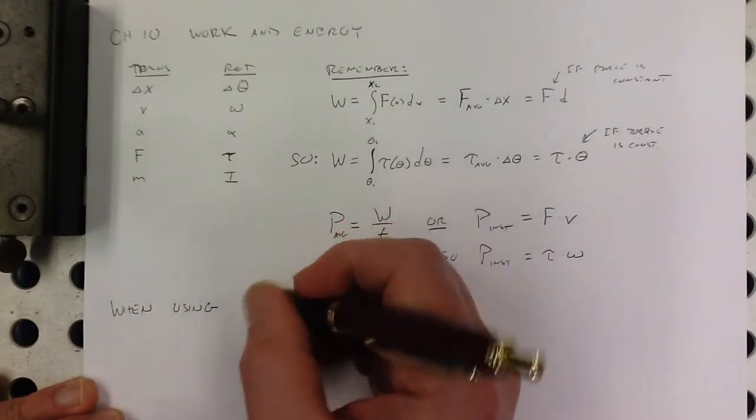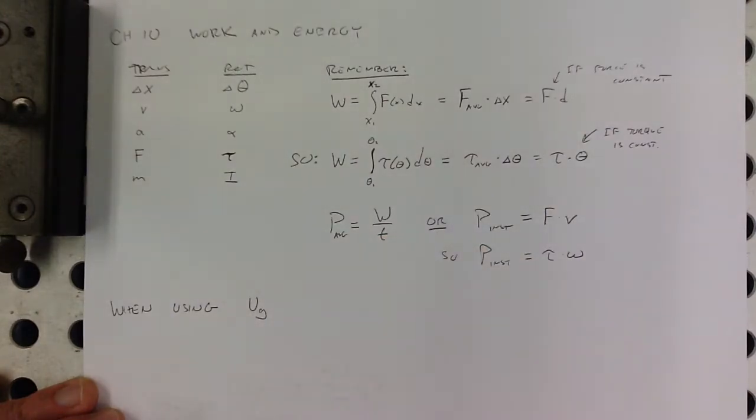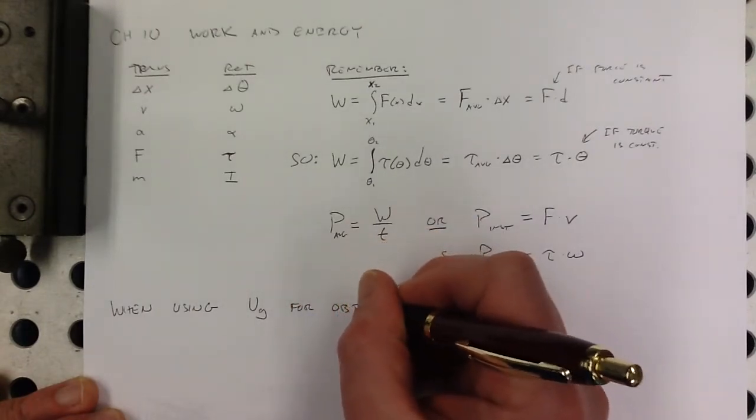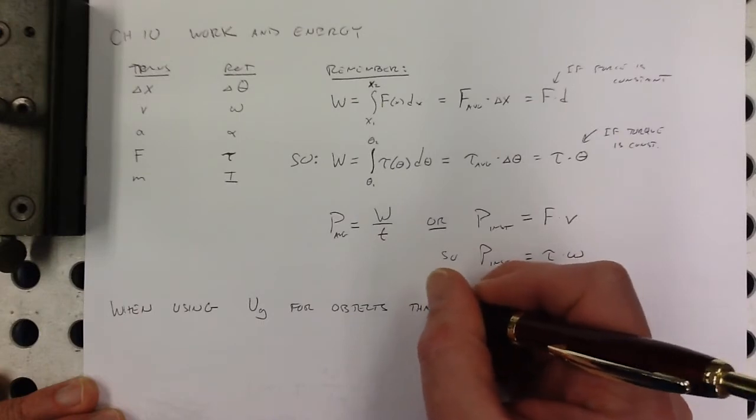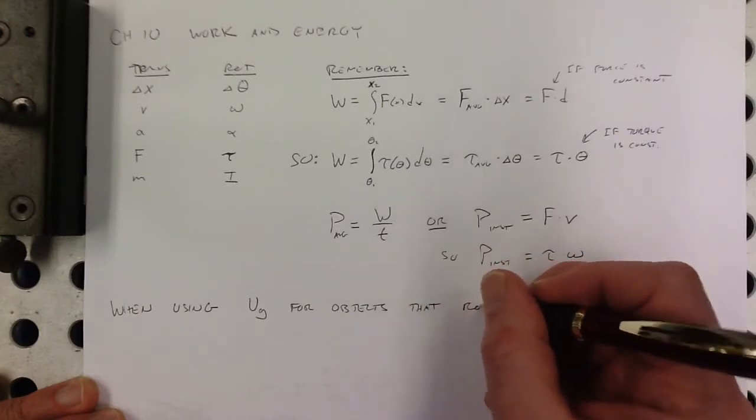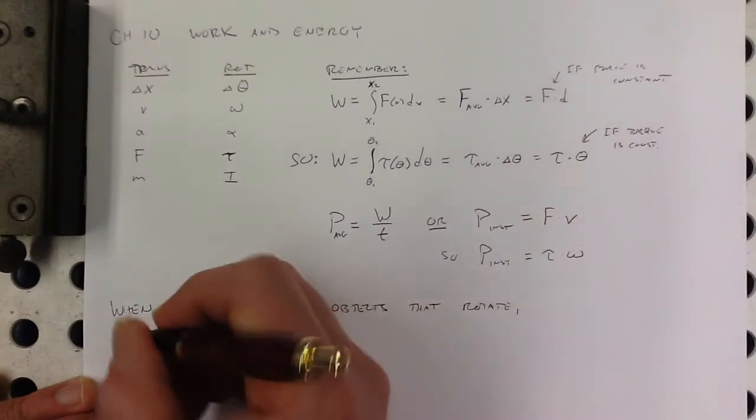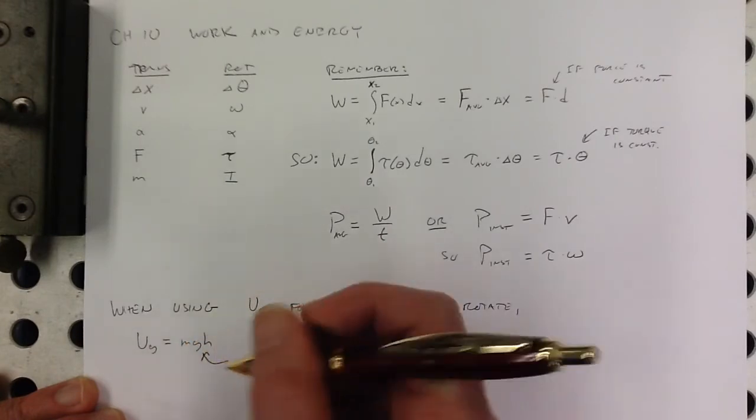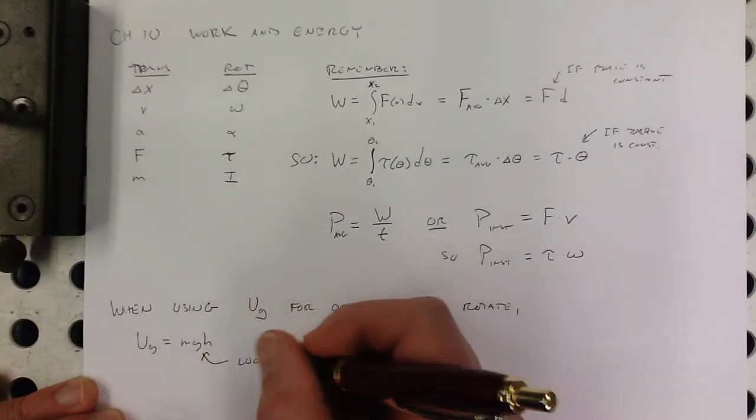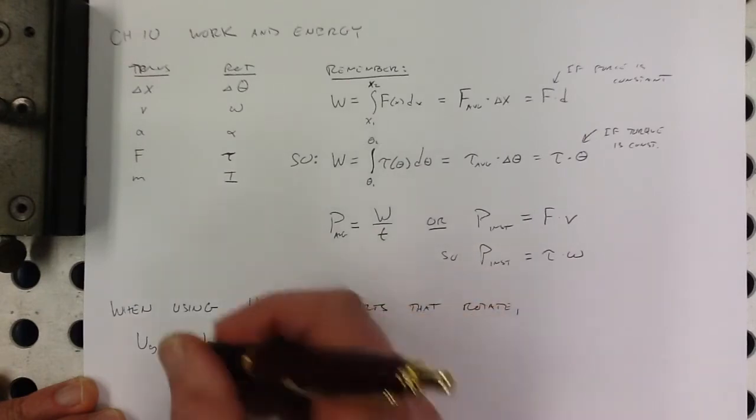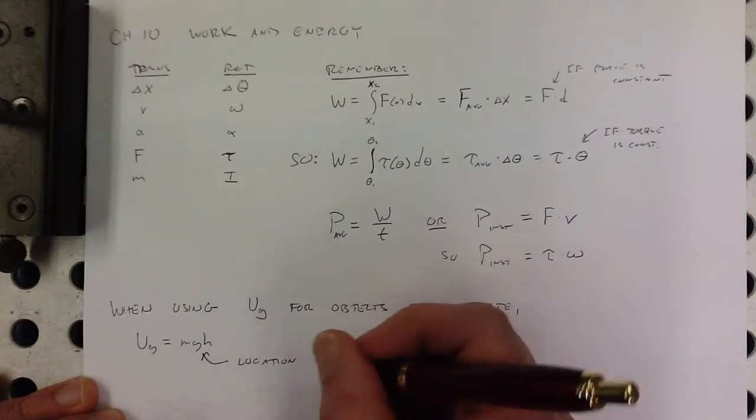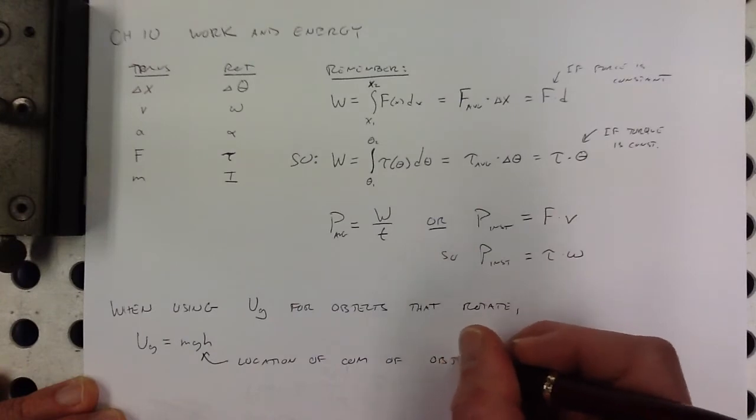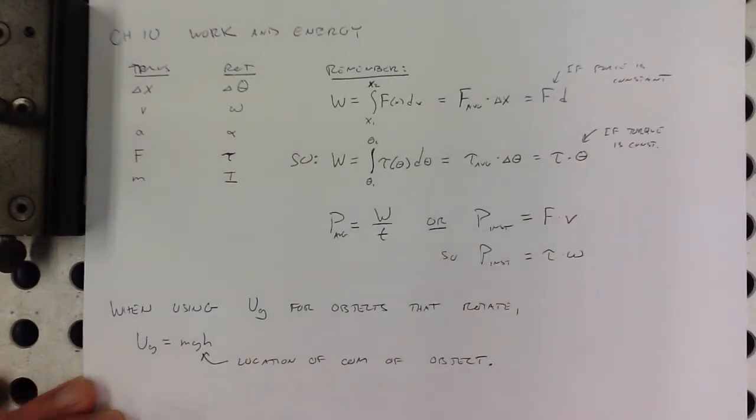And the only other thing that you need to know here is that when you're using gravitational potential energy for objects that rotate, Ug is still equal to mgh, but the h is the location or the change in height. We measure that relative to the location of the center of mass of the object. That's very important to understand.